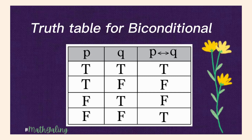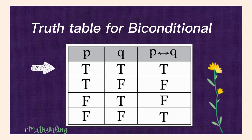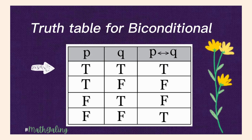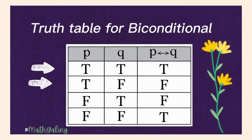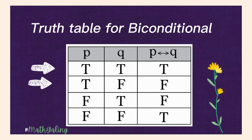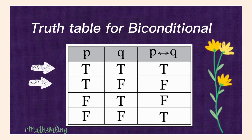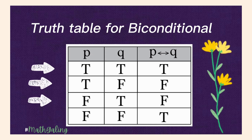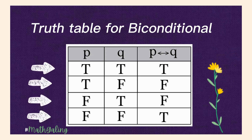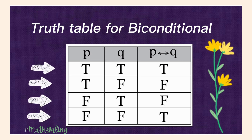Truth Table for Biconditional. If the first statement is true and the second is also true, and they are connected with 'if and only if,' the truth value is true. Second, if the first is true and the second is false, the truth value is false. Third, if the first is false and the second is true, the truth value is false. Then, if the first is false and the second is also false and connected with 'if and only if,' the truth value is true.